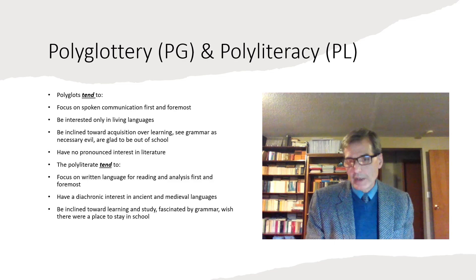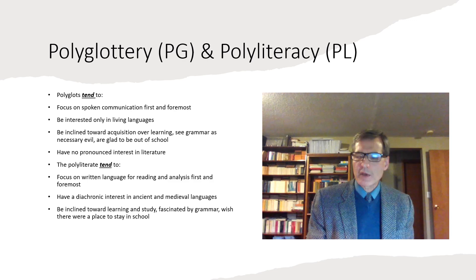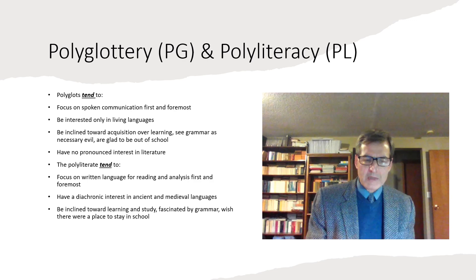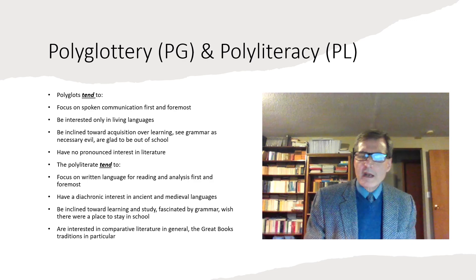If you're interested in diachronic languages, then you're likely to become more interested and say, I'm interested in reading books. I'm interested because you can't speak Middle High German or ancient Egyptian. Well, Assimil's got some recordings of Egyptian now. But basically, if you're interested in ancient and medieval languages, that's what I call diachronic interest. That's a hallmark of polyliteracy. Polyliterate people is, I would say that they prefer learning to acquisition. They prefer, they like studying. They tend to find grammar fascinating. And when it comes to school, I would say that we tend to wish there were more of a place for us in the schools and in the academies.